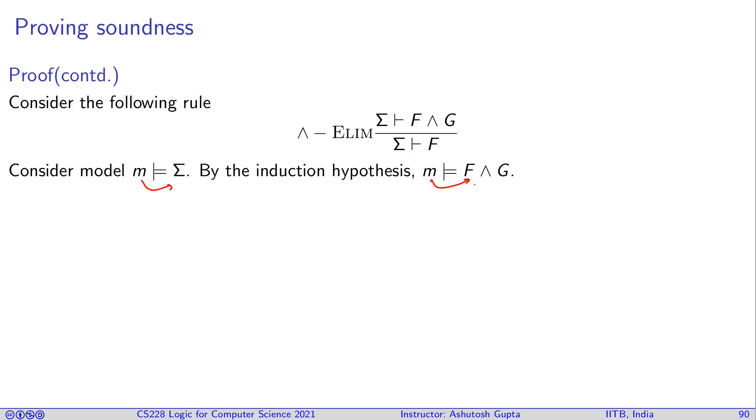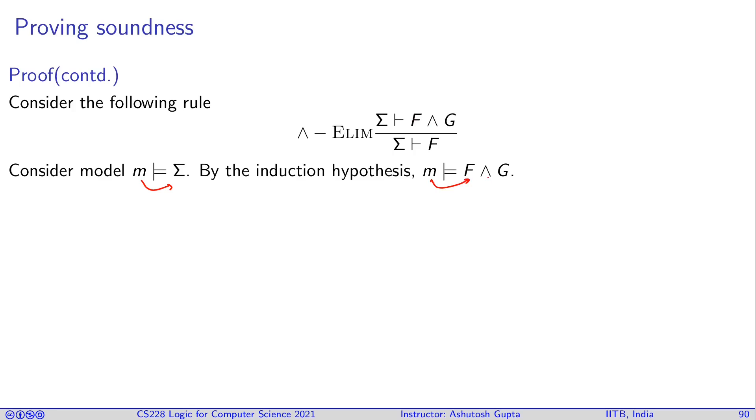Since m satisfies F and G, using the truth table we can show that if m satisfies F and G then m satisfies F. You can see that m satisfies F and G—that is this row—and I can say m satisfies F is a fairly trivial observation. But you need to check it. So that means I have a proof that this rule is correct.